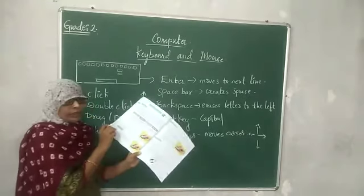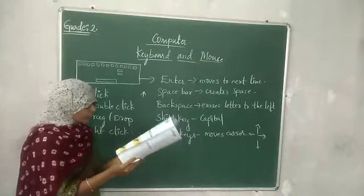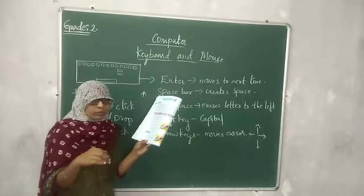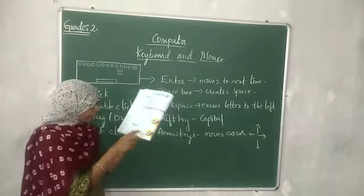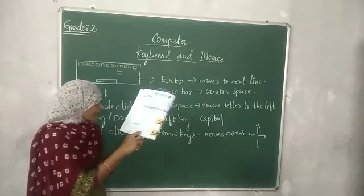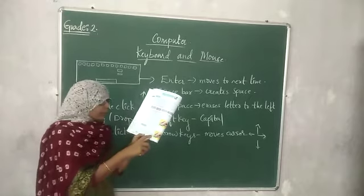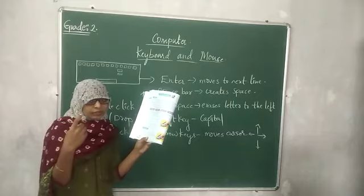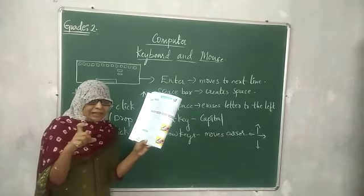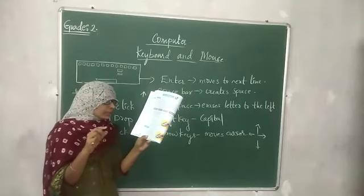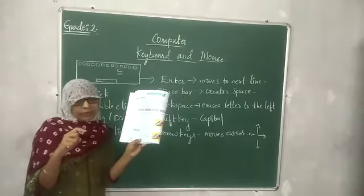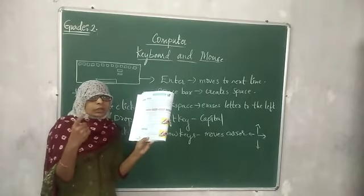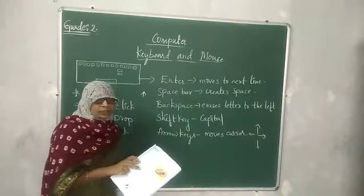Let us know about the click — how we have to use this. Hold your mouse as shown in the figure. Press the left mouse button using the index finger. As I told you, the index finger is placed on the left button. Press it or click it slightly, then release it. Just press the left button with the index finger and release it quickly.